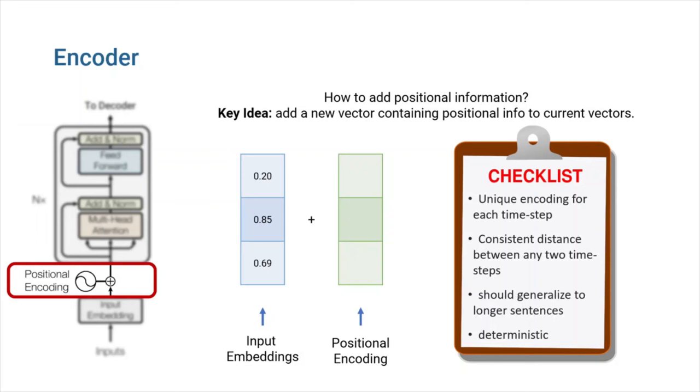The positional encoding should satisfy the following criteria. It should output a unique encoding for each time step. Distance between any two time steps should be consistent across sentences with different length. Our model should generalize to longer sentences without any efforts. Its values should be bounded, and it must be deterministic.